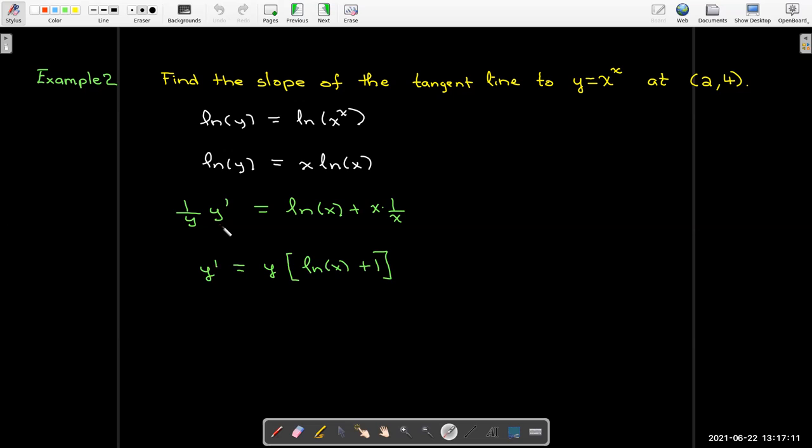And so now I can solve for y prime and replace y with x to the power of x. Now I'd like to evaluate that, because the slope is going to be a number. And so I'll evaluate that when x equals 2, to get 4 times the quantity natural log of 2 plus 1.